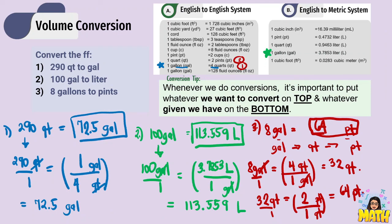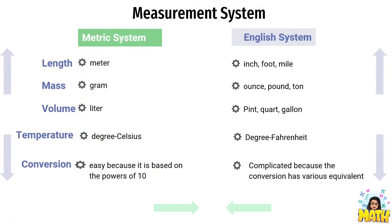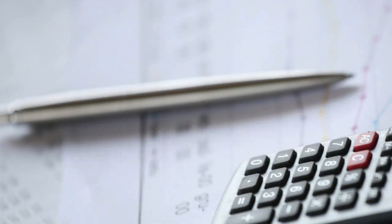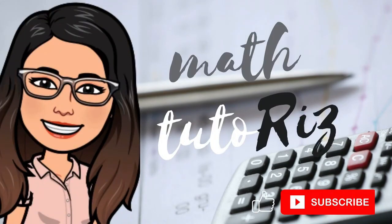Remember: we just followed the same steps for length, area, mass, and volume. We simply multiply the given by a fraction where the numerator is the unit we want to convert to and the denominator is the given. If there is no direct conversion, look for intermediate units to reach the final desired unit. In this video lesson, we converted English units to other English units and showed examples of conversion from English to metric system. The next video lesson covers applications of conversion through problem solving — please make sure to watch the next video. Bye-bye.